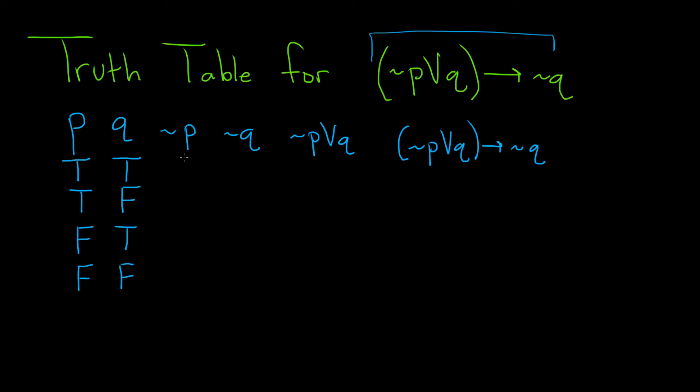Okay, so for not P, we just need to look at the column where P is and then negate all of the truth values. So true becomes false, true becomes false, false becomes true, and false becomes true.